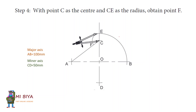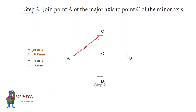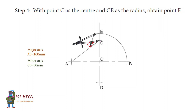To obtain point F in Step 4, because you've got point C already, you position your compass at C, then stretch it to point E. Then you draw this arc here to obtain point F. This point is very, very important. So you are done with Step 4.